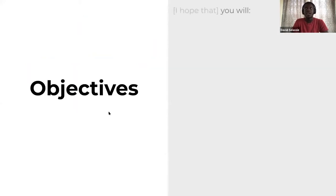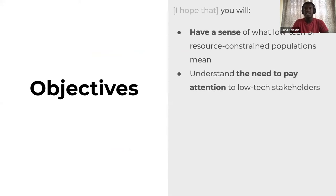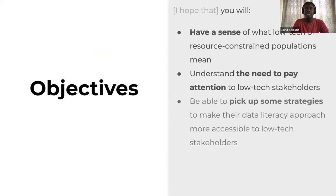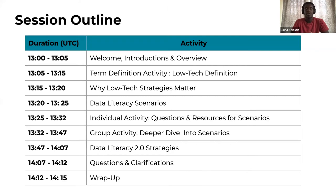The objectives for this session are that you will come out having a sense of what low-tech or resource-constrained populations mean, understand the need to pay attention to low-tech stakeholders, be able to pick up some strategies that make data literacy approaches more accessible, and hopefully be excited to explore more afterwards. The outline includes definition activities, why low-tech strategies matter, data literacy scenarios, individual and group activities, data literacy 2.0 strategies, and questions. We aim to do this in 75 minutes of interactive activities.